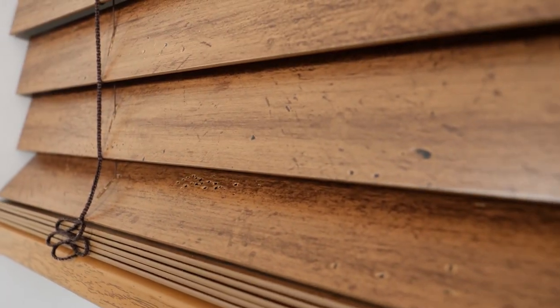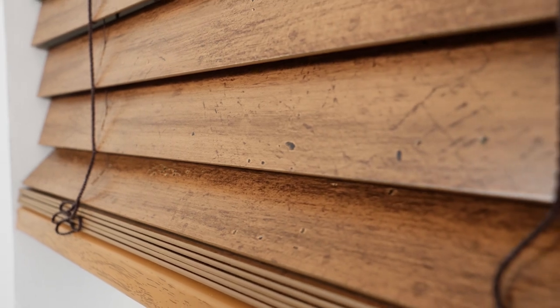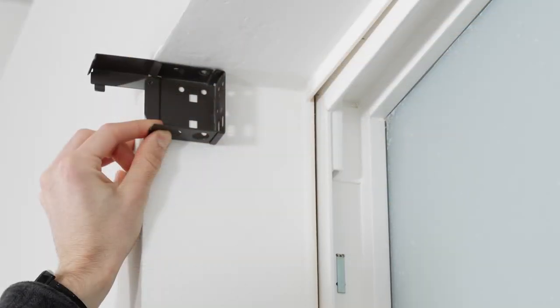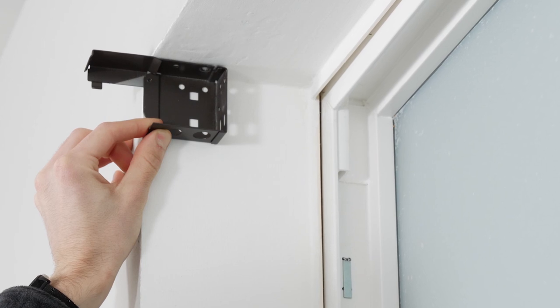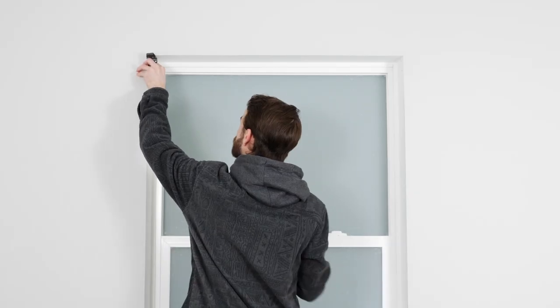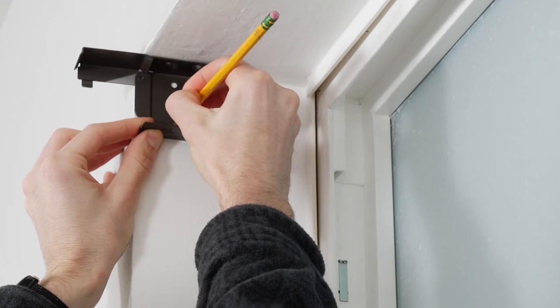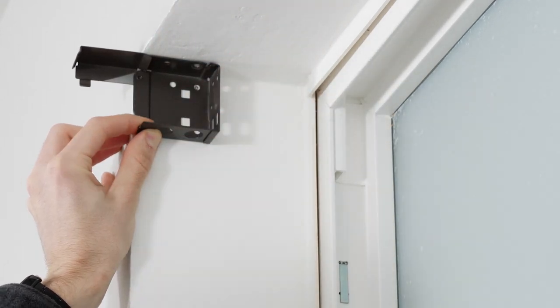Some of the reasons people love wood and faux wood blinds is because they're durable and easy to clean and maintain. They're also really easy to put up. The first step is to mark where you want to place your brackets. Place the brackets in the top corners of the window like this. Use a pencil or marker to mark the locations for each screw.